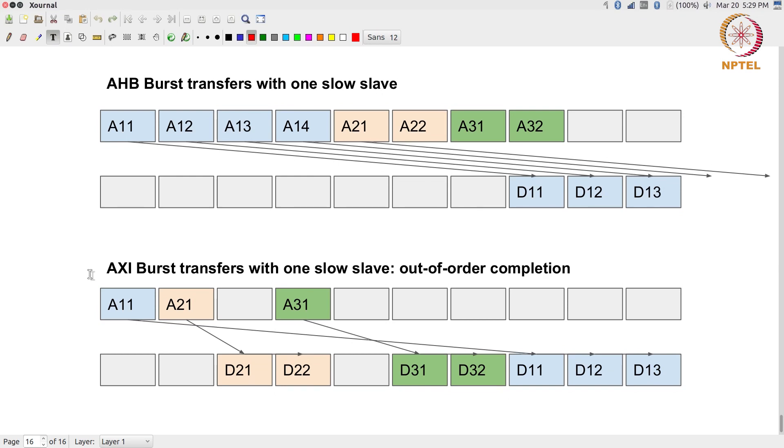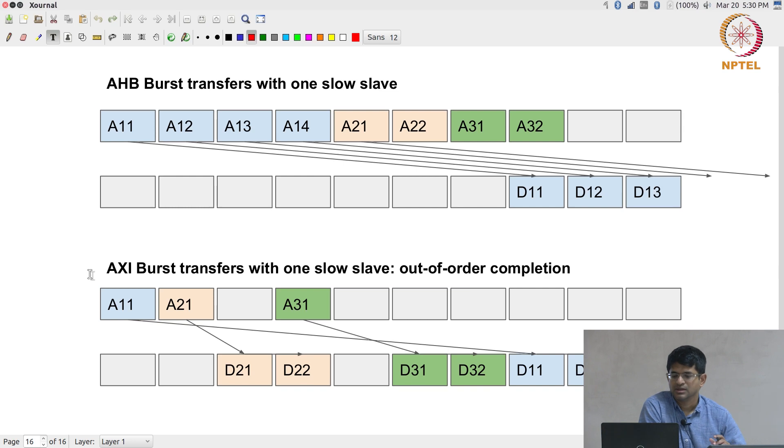Obviously, I am glossing over a lot of details over here, but in principle at least you can see how this can be made to happen. The moment I associate the transaction ID with every transaction, it means that the arbiter, the master, as long as they all understand mutually what is going on, it is possible to essentially switch over from one transaction to another and say I will wait until other transactions go ahead and wait until this transaction has time to complete.